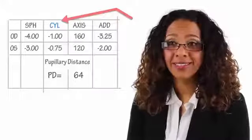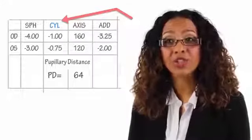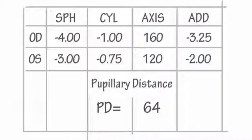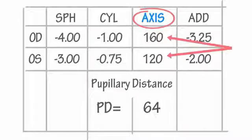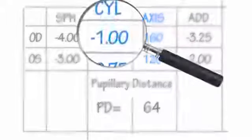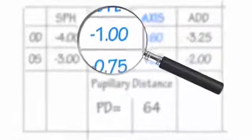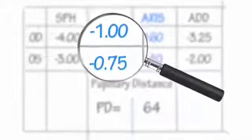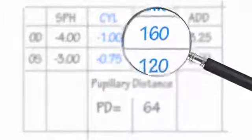So if you do have astigmatism, you'll see CYL, which is the degree of which your eye is shaped like a football. And you'll also see axis, which represents where the vision is blurred from 1 to 180 degrees. CYL equals the degree of the eye being more shaped like a football, and axis represents where the vision is blurred.